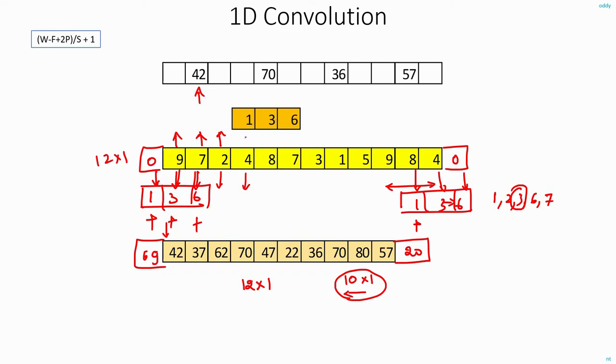And this time I shift the filter to the right by 3 units. And multiply with the respective elements. This will be 4 times 1, 8 times 3 and 7 times 6, add it up to get 70. Next you will get 36 and finally 57. So here in this case my output feature map is of size just 4 by 1.